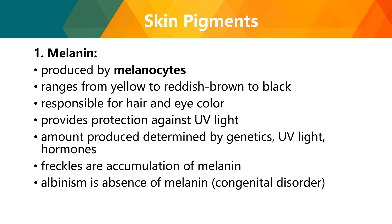People with more melanin are better protected from UV light compared to fair-skinned people, who are more prone to UV damage. Freckles, while considered cute by some, are actually an accumulation of melanin in the skin and are considered an abnormality. Albinism is the congenital absence of melanin, meaning from birth there is an abnormality in melanin production.